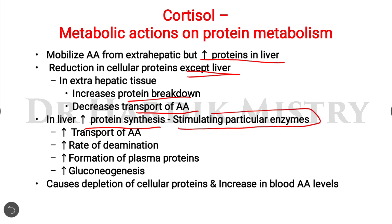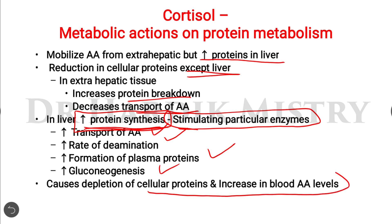These liver proteins are essentially the enzymes for gluconeogenesis. There is increased protein synthesis in the liver, increased transport of amino acids into the liver, increased rate of deamination, increased formation of plasma proteins, and increased gluconeogenesis. Overall, this causes depletion of cellular proteins and an increase in blood amino acid levels.